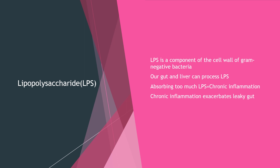However, you can absorb too much lipopolysaccharide — in other words, you can overwhelm the gut and liver's ability to process it. When this occurs, the result is chronic inflammation. Once we are chronically inflamed, there's inflammation going throughout the bloodstream. This exacerbates leaky gut because inflammation causes leaky gut and leaky gut causes inflammation — they feed into one another.